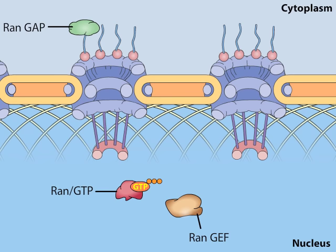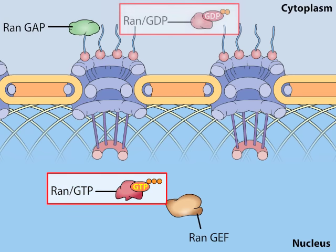By the actions of RAN-GEF, found only in the nucleus, and RAN-GAP, found only in the cytoplasm, a steep gradient of RAN-GTP and RAN-GDP is maintained across the nuclear membrane, with RAN-GTP inside the nucleus and RAN-GDP in the cytoplasm.